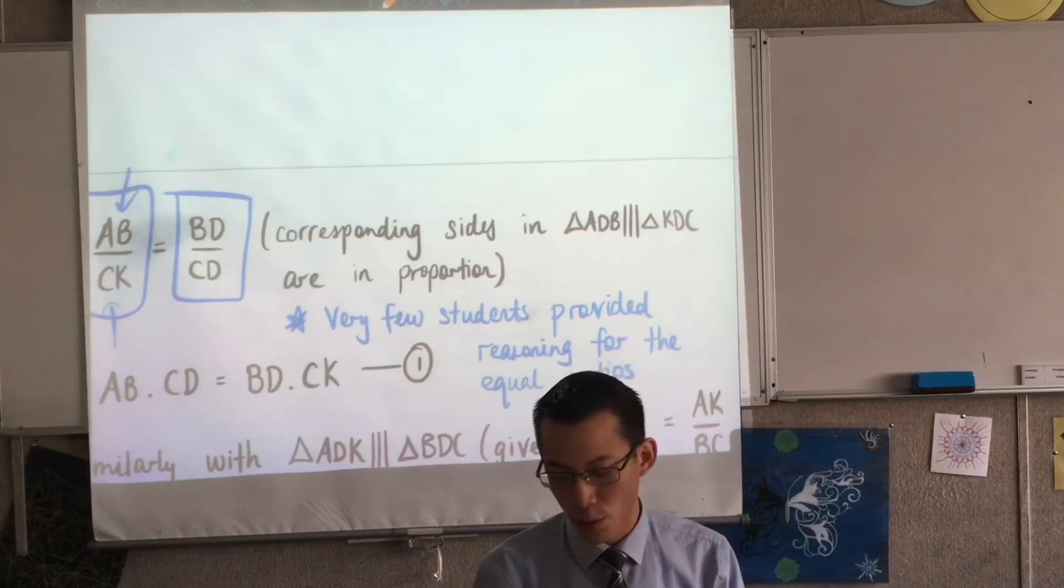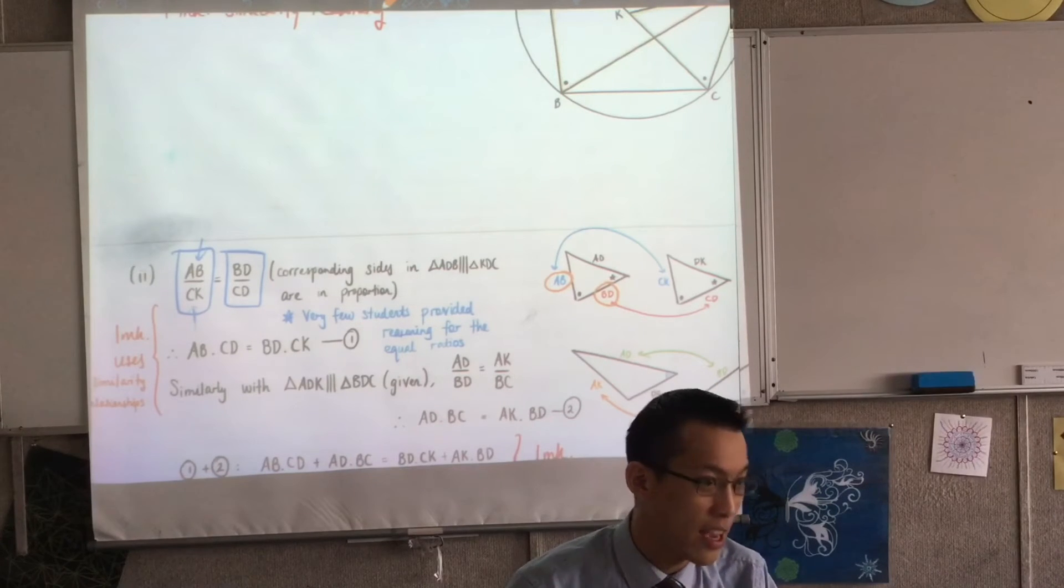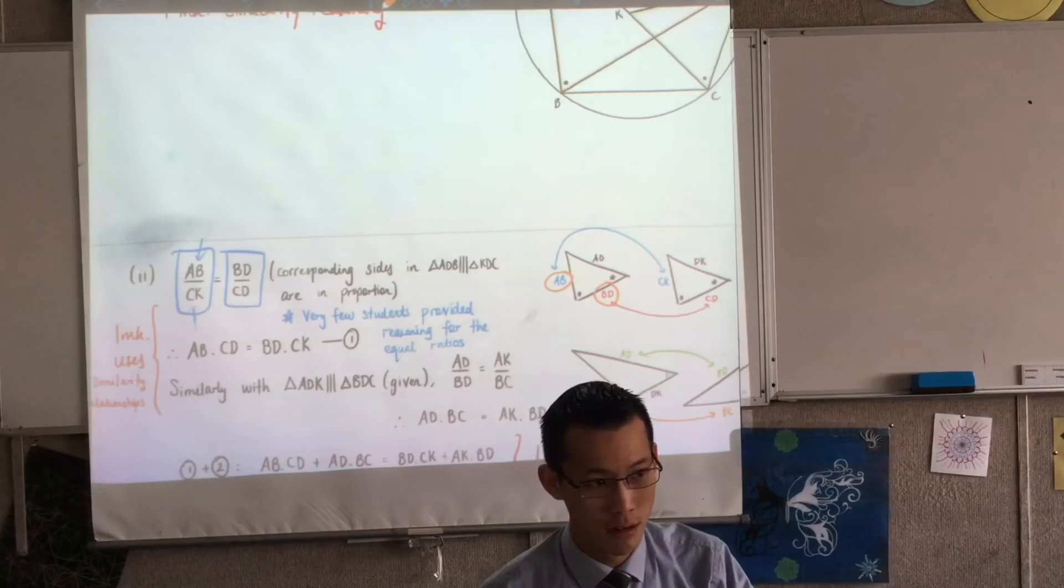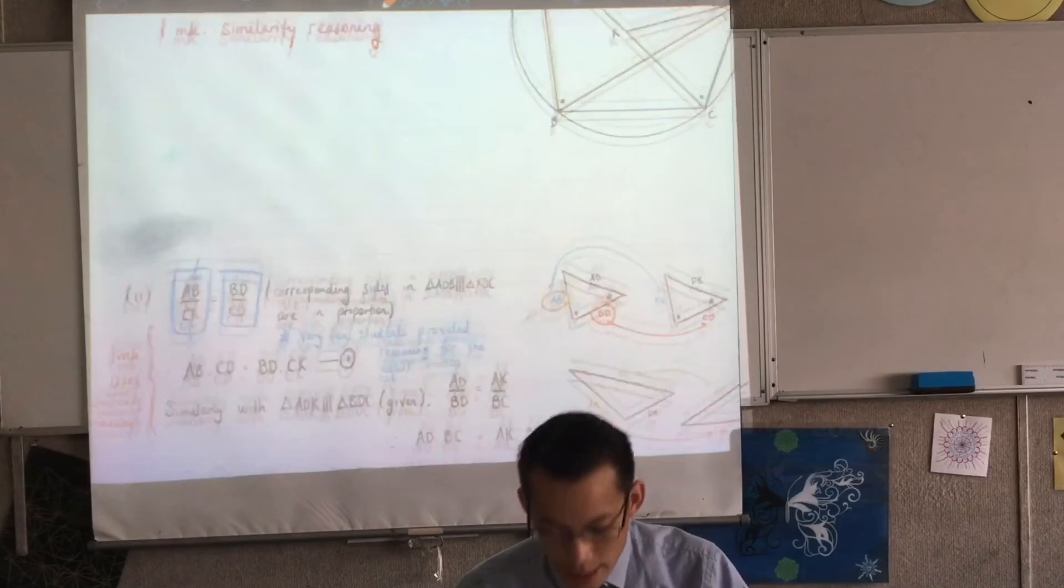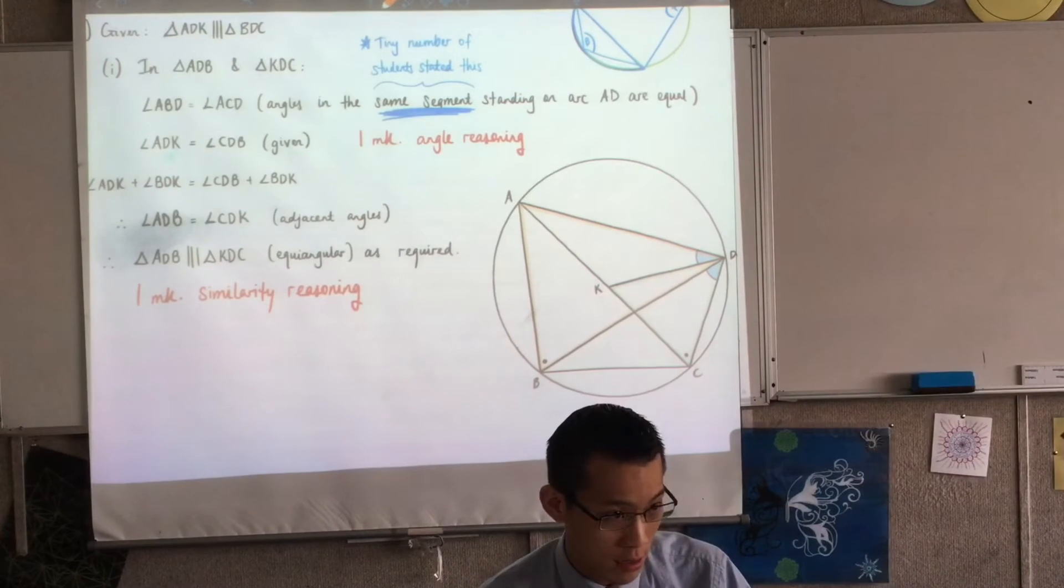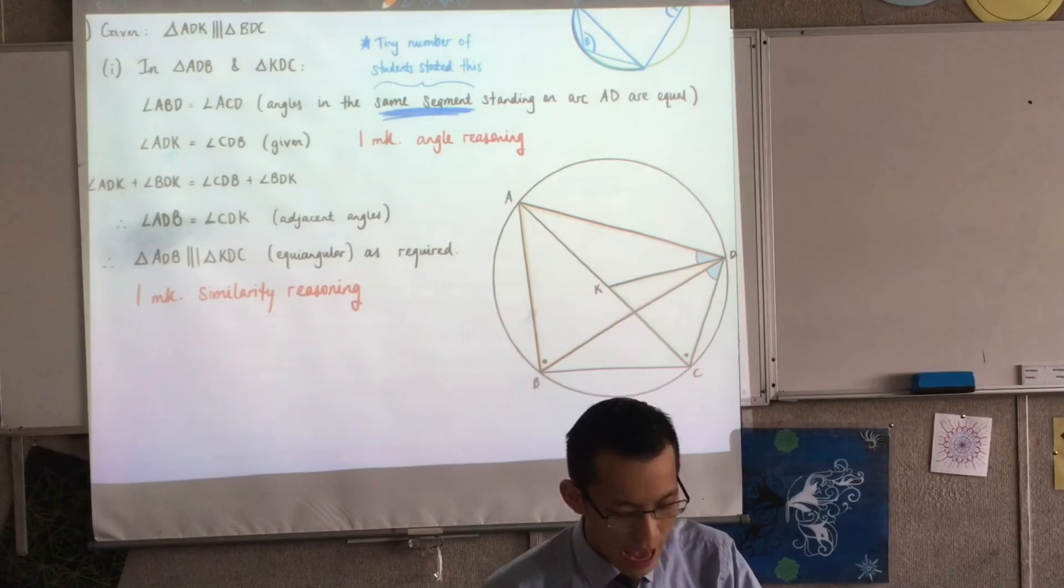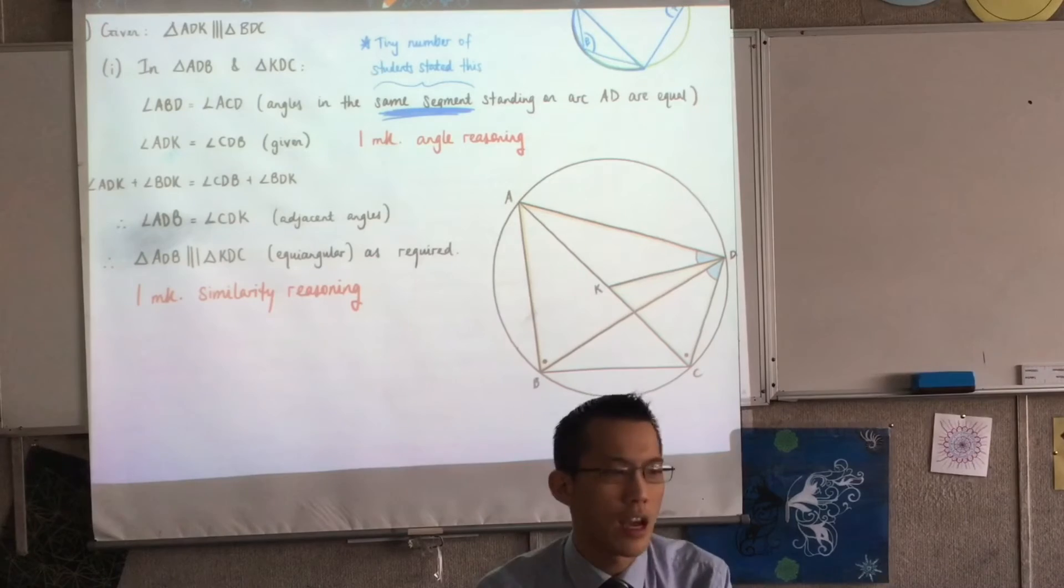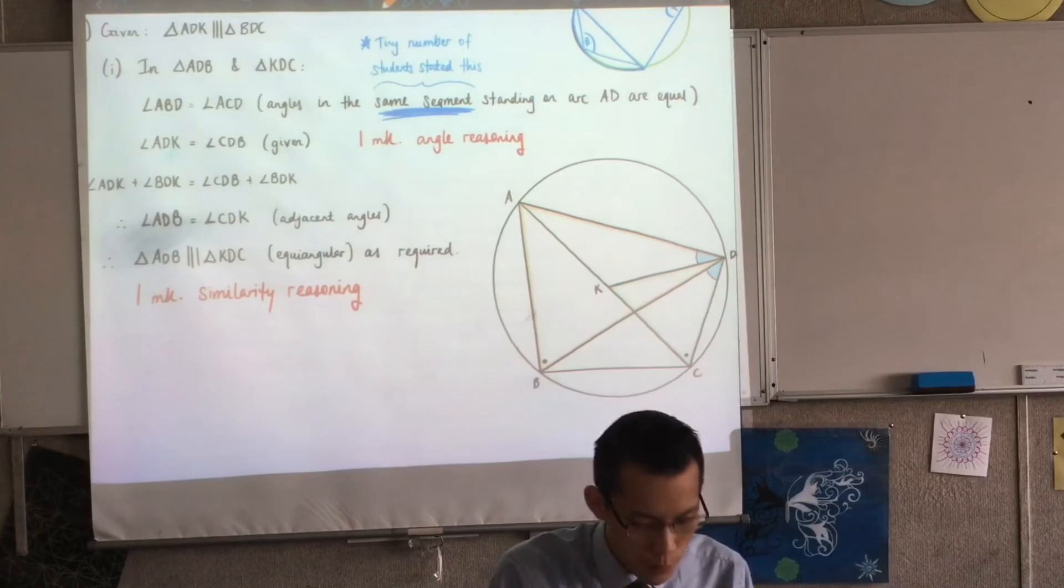I suppose the people who got this wrong didn't notice, because they didn't write the reason. They didn't say corresponding sides in similar triangles. They just said, this on this is this on this. Now, in the previous part, you would have proved that they were similar, but you haven't said anything about the properties of the sides. And when you have a look, I've talked about this before. In extension two, sometimes we're like, oh, okay, it's not the emphasis of question to talk about similar triangles, so just move on.